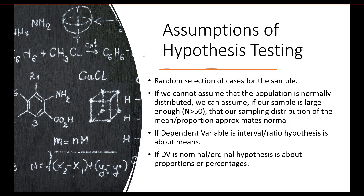Based on the central limit theorem, as long as our sample size is large enough, we don't have to worry about the fact that our population isn't normally distributed, because our sampling distribution will be normally distributed. Our next assumption is if our dependent variable is interval or ratio, our hypothesis is going to be about means. However, if our dependent variable is nominal and/or ordinal, our hypothesis is going to be about proportions or percentages.